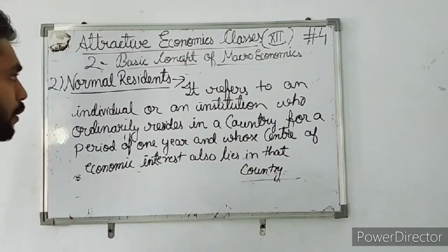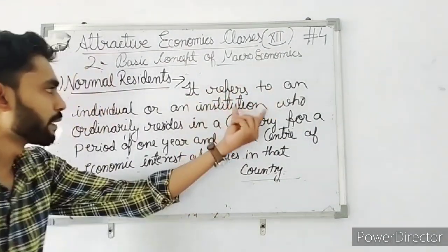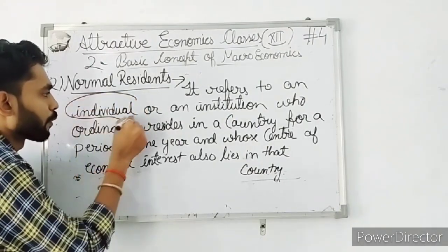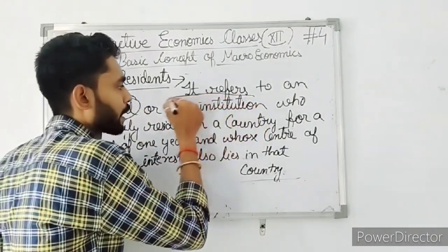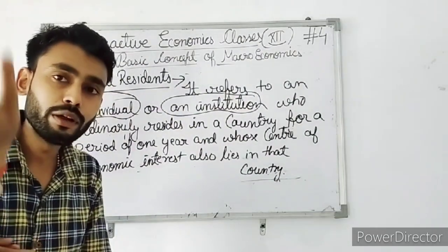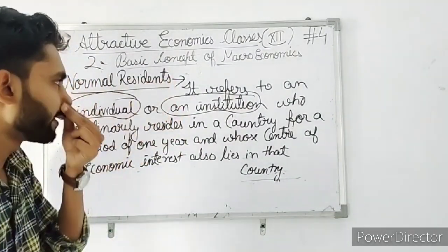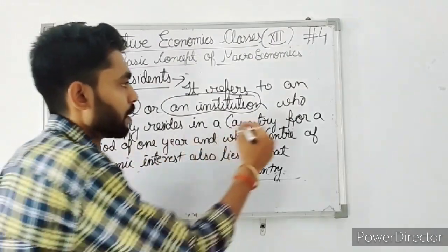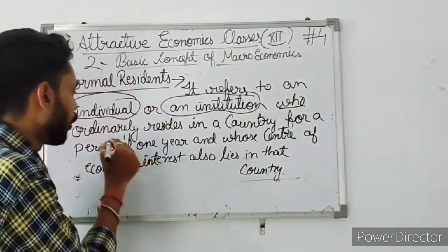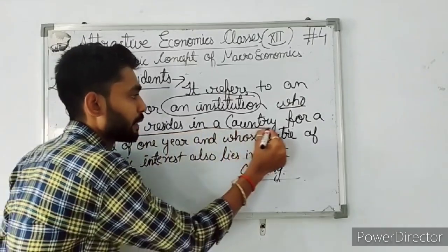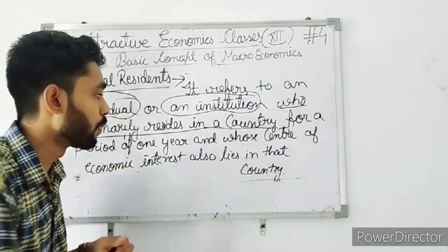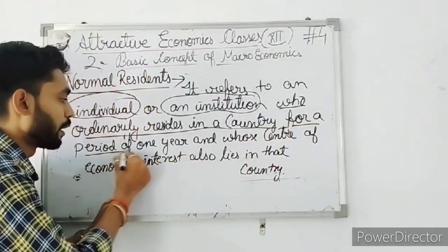It refers to an individual or an institution — yani normal resident jo hai, koi individual bhi ho sakta hai ya koi institution bhi ho sakti hai — who ordinarily resides in that country, which will remain in the country for a period of one year.